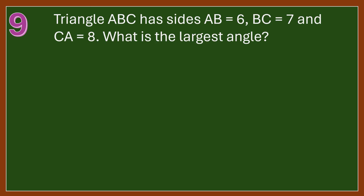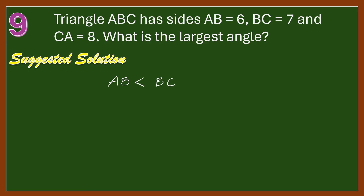Number 9: Triangle ABC has sides AB equals 6, BC equals 7, and CA equals 8. What is the largest angle? In a triangle, the longest side is opposite the largest angle. Since AB is less than BC, and BC is less than CA, the sides in order are AB, BC, CA. The angle opposite CA (which is angle B) is the largest. Therefore, the largest angle is angle B.